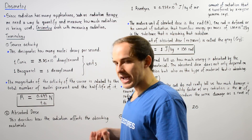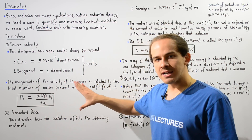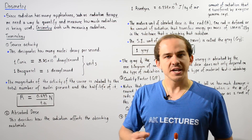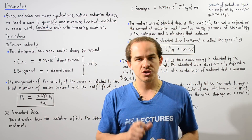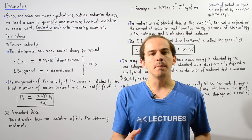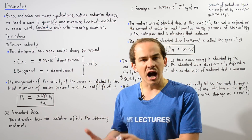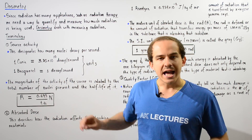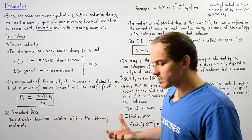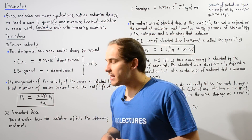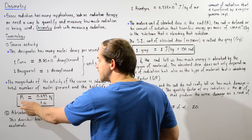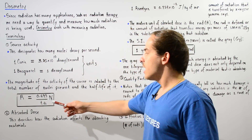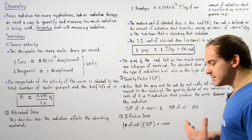The magnitude of the activity depends on two things. First, it depends on the total number of radioactive nuclei that have not yet undergone decay at that moment in time, designated by uppercase N. Second, the half-life of the radioactive isotope also determines the magnitude. The source activity R is given by the formula: R = 0.693 divided by the half-life, multiplied by N.